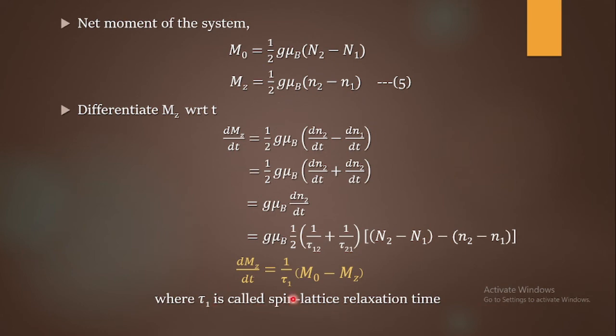The spin-lattice relaxation time τ1 is defined by 1/τ1 = 1/τ12 + 1/τ21.